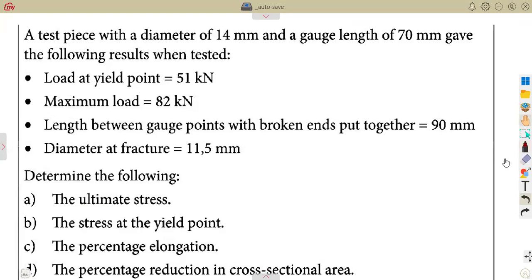They were given a test piece with a diameter of 14 millimeters. So according to our information, the diameter is given: 14 millimeters divided by 1,000, that's 0.014 in meters. The gauge length of 70 millimeters divided by 1,000, 0.07 in meters. Gave the following results.